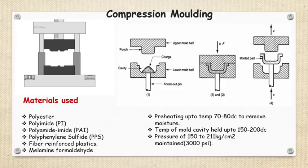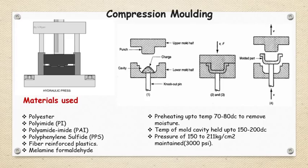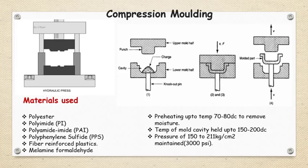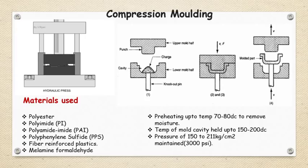The preheating temperature is 70 to 80 degrees Celsius to remove moisture from the powder. The temperature of the mold cavity is held at 150 to 200 degrees Celsius. The pressure applied is nearly 150 to 211 kg per centimeter squared, depending on the size of the component.